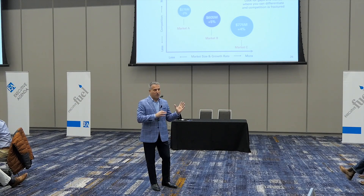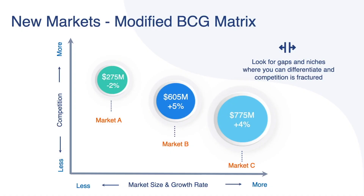The size of the circle is the total addressable market, and the percentage is the growth rate. We over-skew in our conversations about the size of the market, and we under-skew in our conversations about the growth rate. Growth rate is very important.